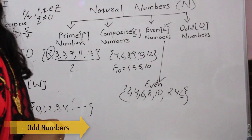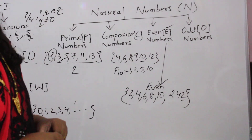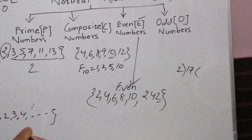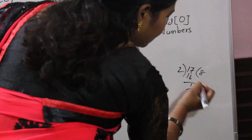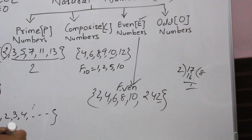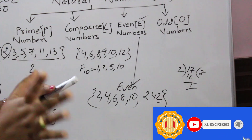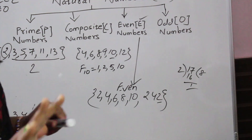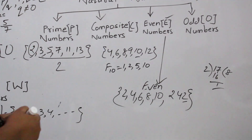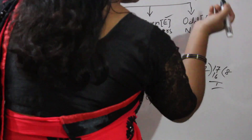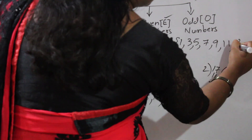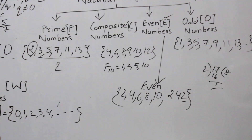Next, odd numbers. All those numbers which are not divisible by 2 are known as odd numbers. For example, 17 divided by 2 gives remainder 1, not 0. So numbers where dividing by 2 does not give remainder 0 are not divisible by 2. These are odd numbers. Odd number set is denoted by capital O: 1, 3, 5, 7, 9, 11, 13, and so on.